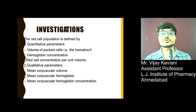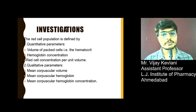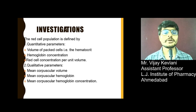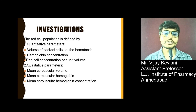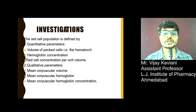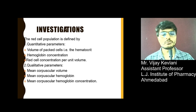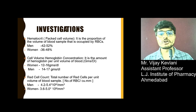Investigation: the red cell population is defined by quantitative parameters — volume of packed cells (hematocrit), hemoglobin concentration, and red cell concentration per unit volume. Qualitative parameters include MCV (mean corpuscular volume), mean corpuscular hemoglobin (MCH), and mean corpuscular hemoglobin concentration (MCHC). These are the normal ranges of all the parameters.